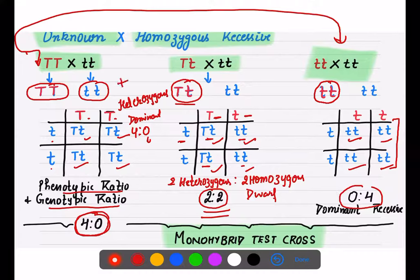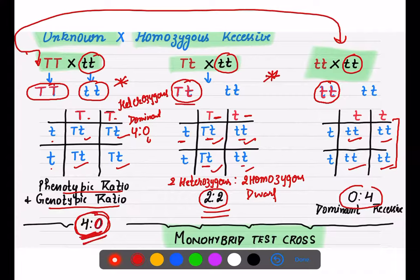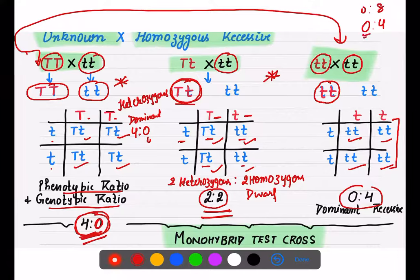These three conditions are important for exams. If the ratio of dominant to recessive is 4:0, the unknown genotype is homozygous dominant. If both are equal, the genotype is heterozygous. If the ratio is 0:4 or 0:8, there is no dominant expression and the genotype is homozygous recessive.